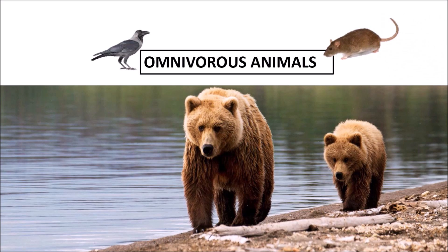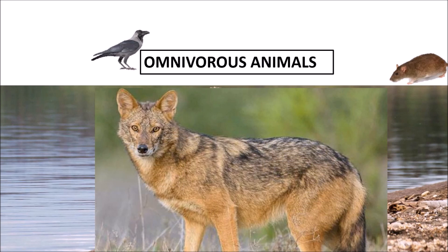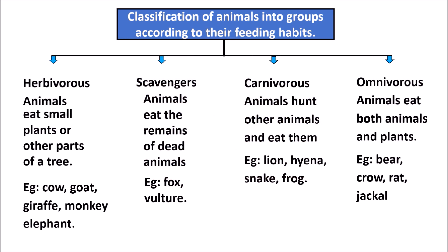Omnivorous animals: animals like bear, crow, rat, and jackal eat both animals and plants. Such animals are called omnivorous animals. This chart shows the classification of animals into groups according to their feeding habits. As a fun activity, you can add more names of animals falling into each category.